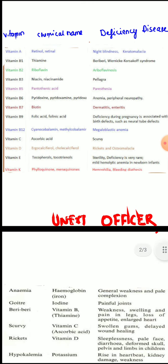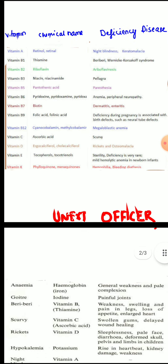About vitamin B12 or cyanocobalamin deficiency: like folic acid deficiency, it also causes megaloblastic anemia, characterized by large-sized RBCs. Vitamin B12 deficiency is usually seen in people who follow a strict vegetarian diet. Vitamin C deficiency or ascorbic acid deficiency is called scurvy. Scurvy is characterized by bleeding gums, easy bruising, and red rashes over the body.